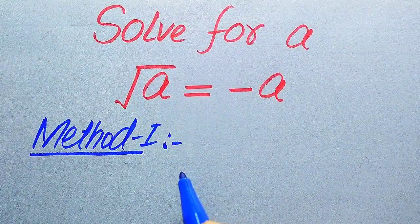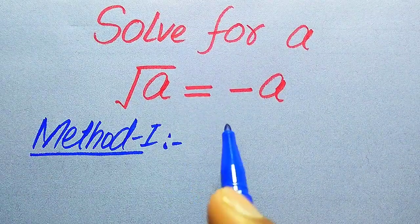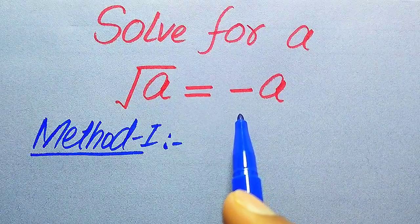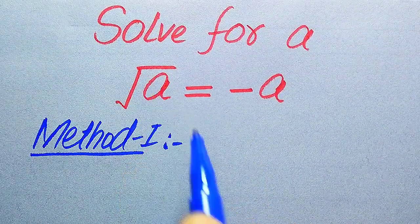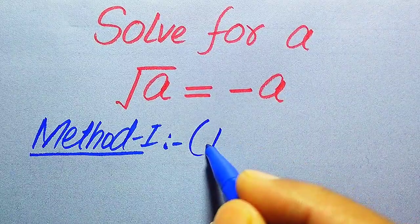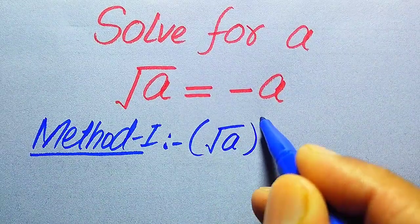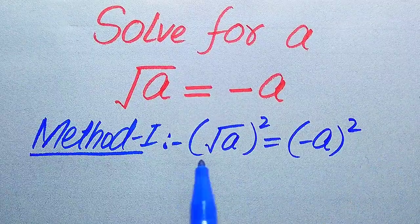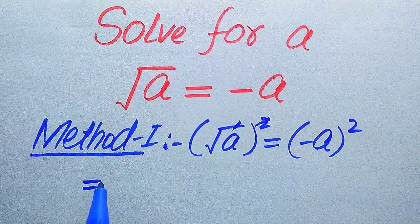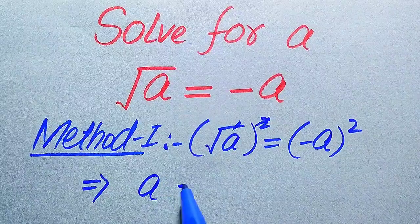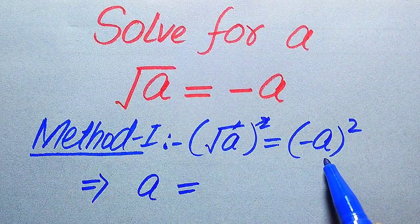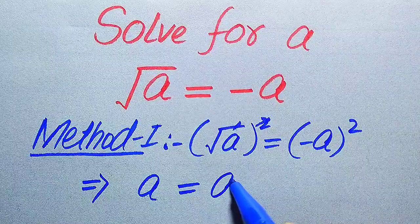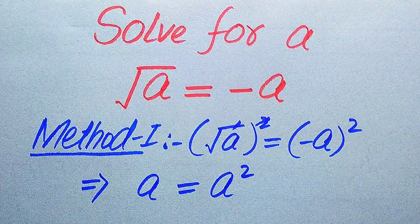The very first thing we are going to do in the first step is remove this square root sign. For this we apply squaring on both sides, and when we square on both sides it will be written in this form. This square and this square root are cancelled out by each other, and we get A equals minus A whole squared, and we know that minus A squared becomes plus A squared.